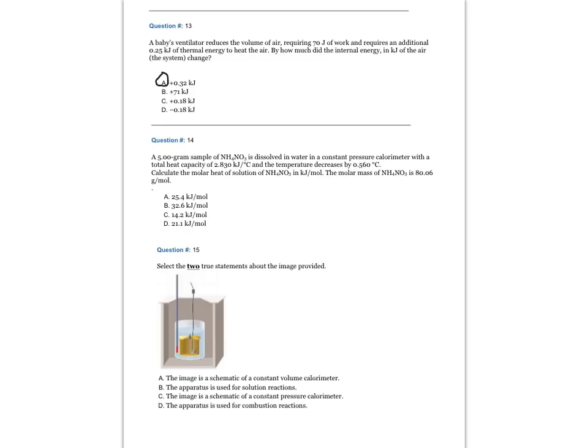Question number 14: A 5.00 gram sample of ammonium nitrogen is dissolved in water in a constant pressure calorimeter with a total heat capacity of 2.830 kilojoules per degree Celsius. The temperature decreases by 0.560 degrees Celsius. Calculate the molar heat of solution of ammonium nitrate in kilojoules per mole. The molar mass of ammonium nitrate is 80.06 grams per mole.